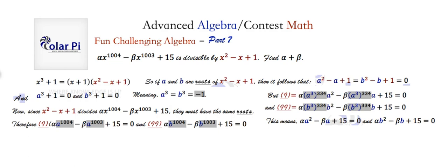But wait, this must automatically mean that alpha and beta are 15. And the reason is because we know right here, we know a squared minus a plus 1 has to be 0, and b squared minus b plus 1 has to equal 0. So if I have alpha times a squared, which is also a quadratic like this here, minus beta times a plus 15 is equal to 0, this quadratic here and this quadratic here must be multiples of one another.